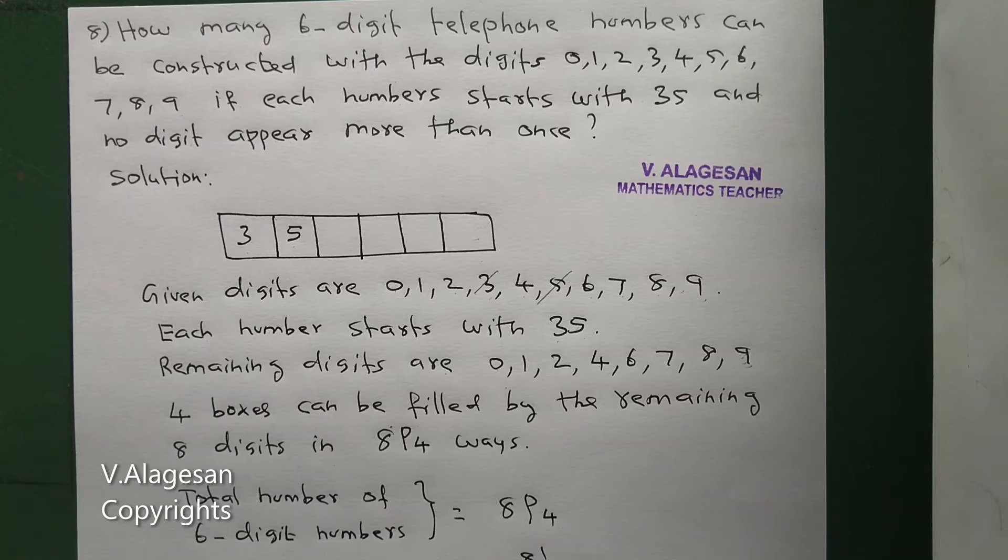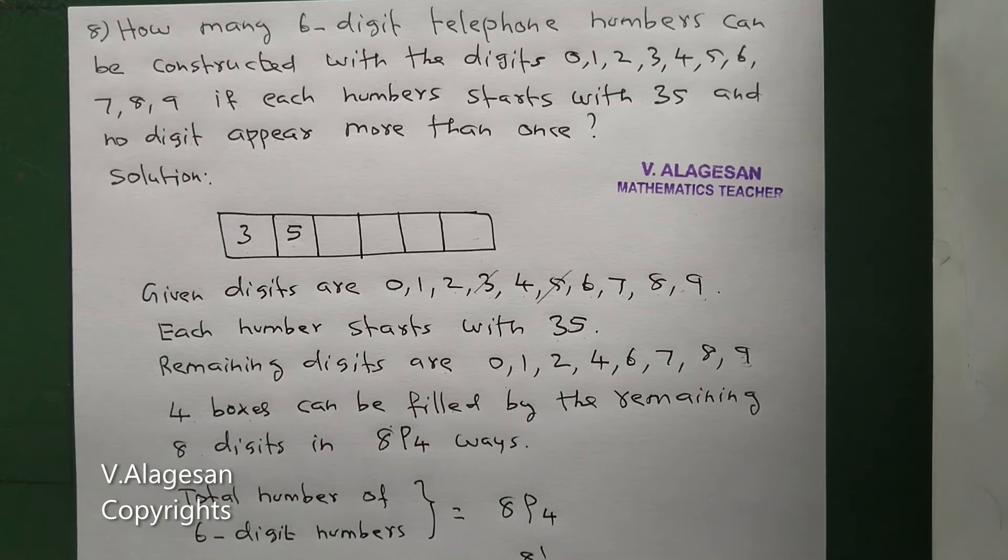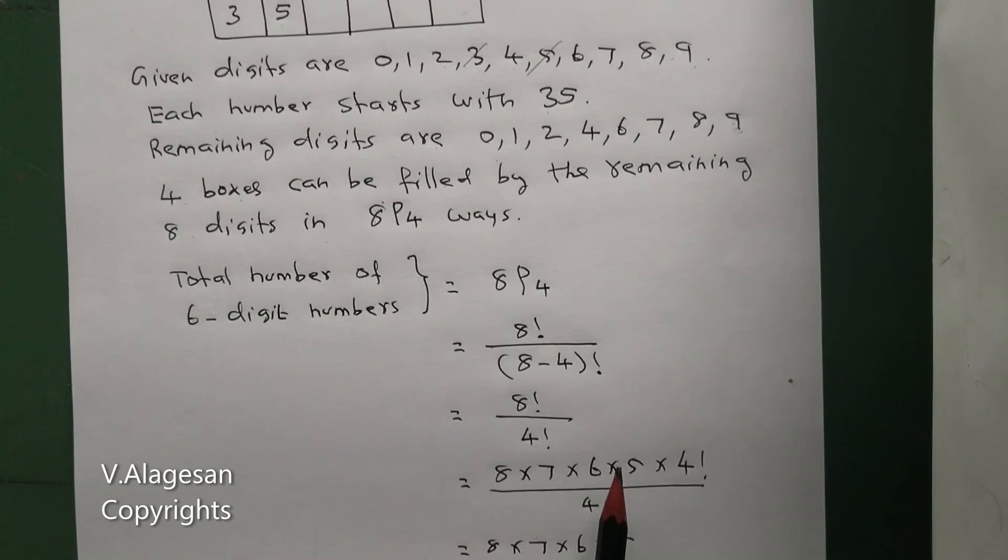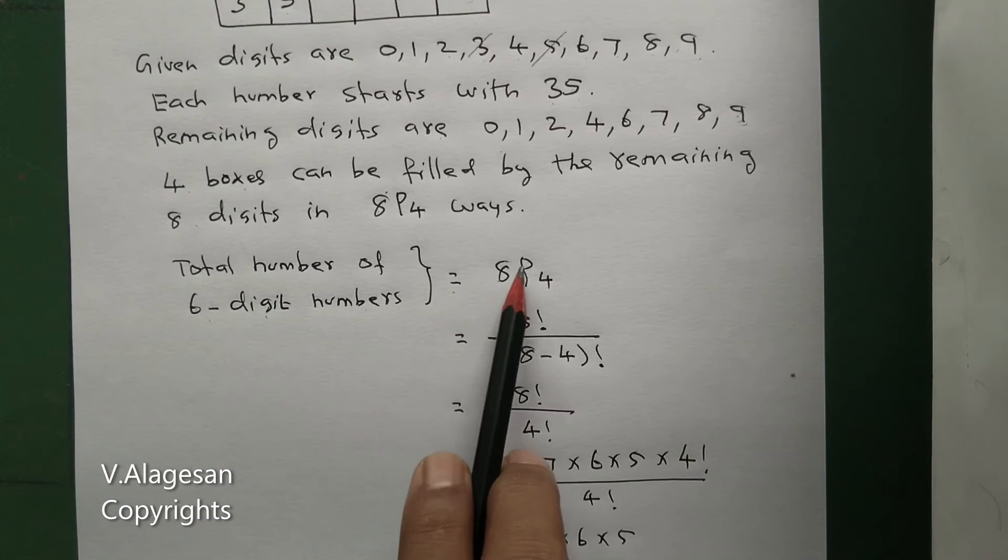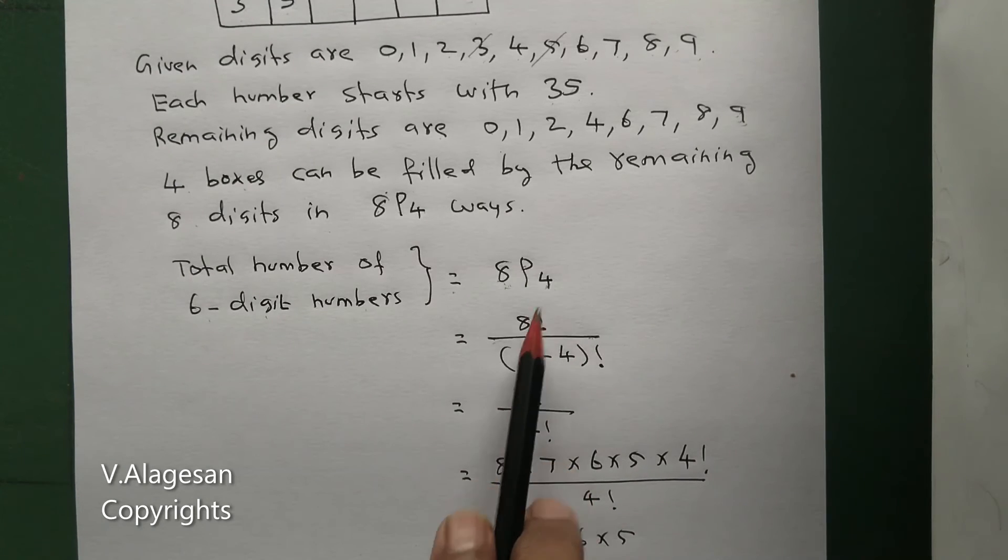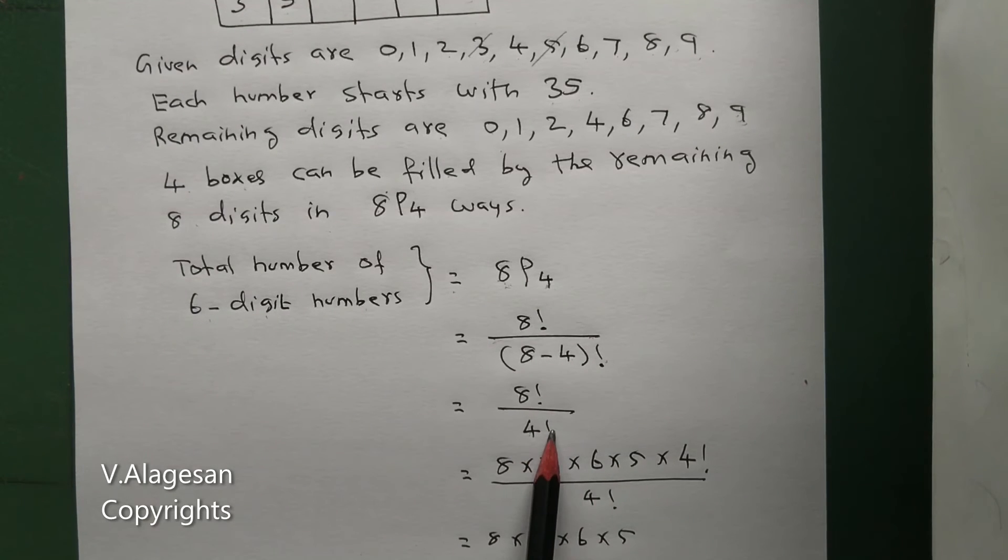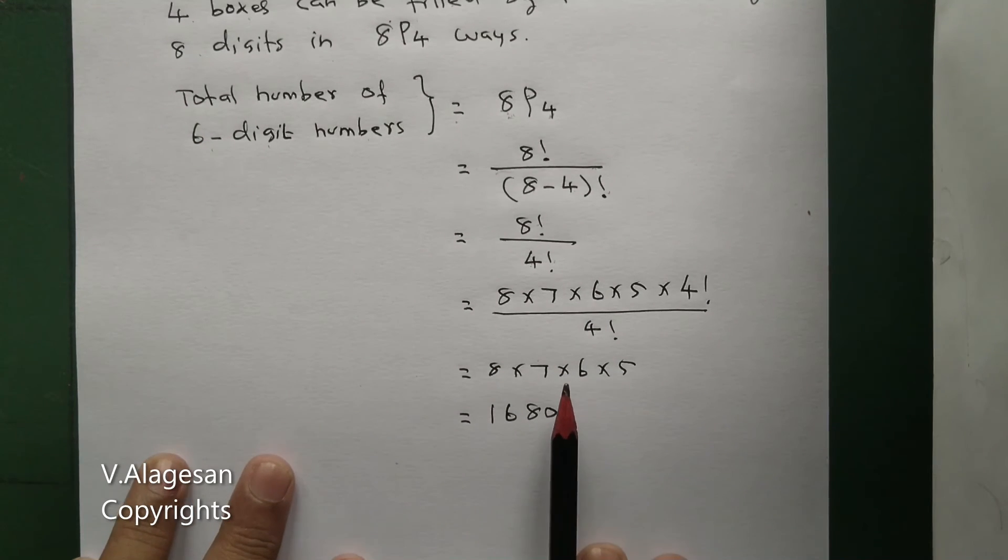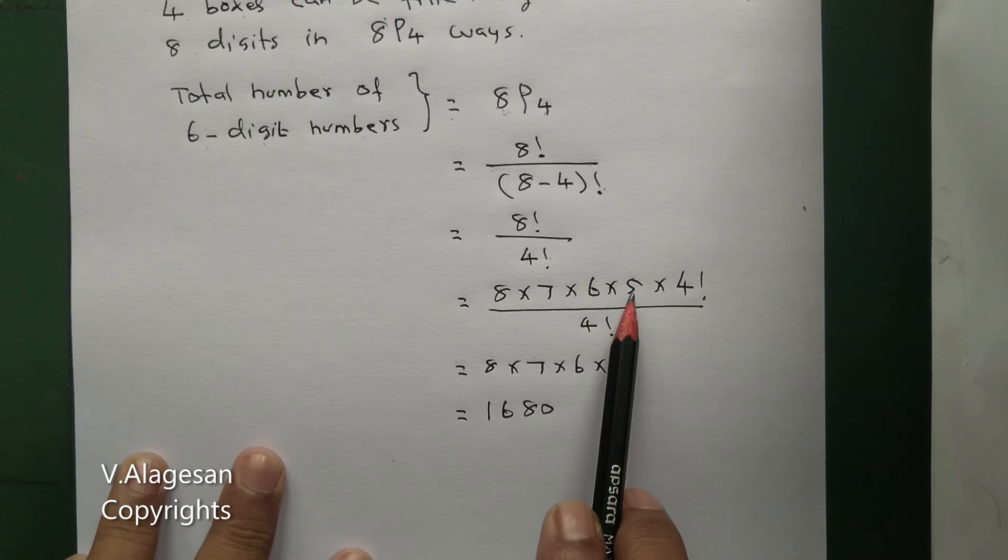Total number of 6-digit numbers equal to 8P4. 8P4 = 8 factorial by (8 minus 4) factorial, okay? 8 minus 4 = 4, so 4 factorial. 8 factorial by 4 factorial. 8 factorial = 8 × 7 × 6 × 5 × 4 factorial.